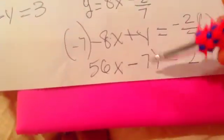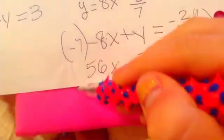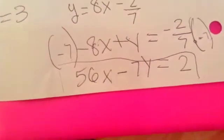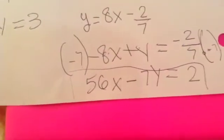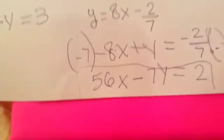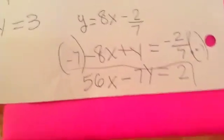Okay, this has to be the right answer. So: 56x minus 7y equals 2. It has to be right. Yes! It just said wonderful — I got it right! Now I have 50 points! Yay! That is the correct answer. I told you guys — I promised it would be correct.